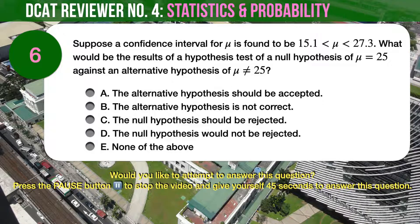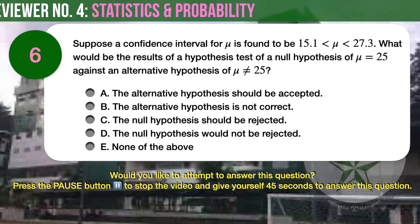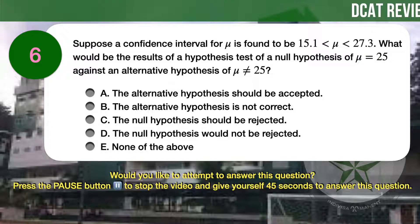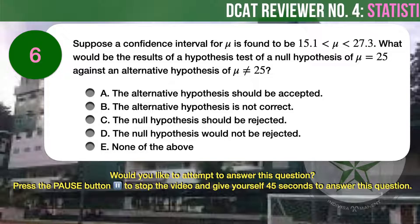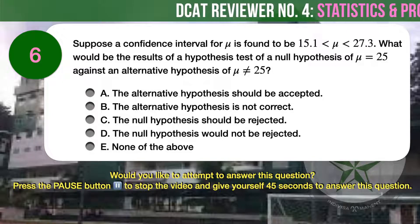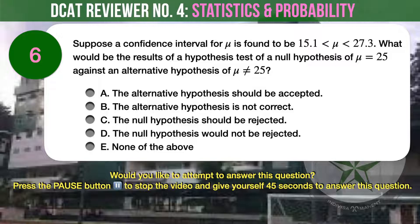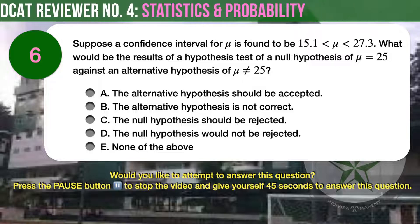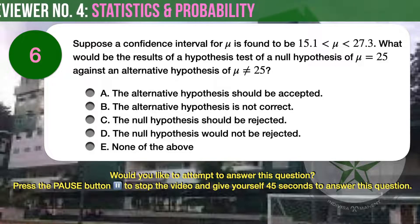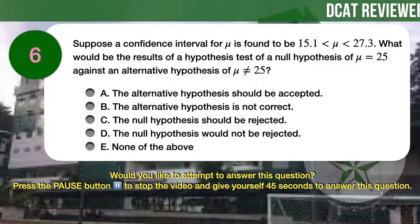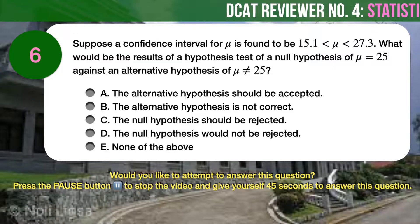Question number 6. Suppose a confidence interval for mu is found to be between 15.1 and 27.3. What would be the result of a hypothesis test of a null hypothesis of mu equals 25 against an alternative hypothesis? A, the alternative hypothesis should be accepted. B, the alternative hypothesis is not correct. C, the null hypothesis should be rejected. D, the null hypothesis would not be rejected. E, none of the above.